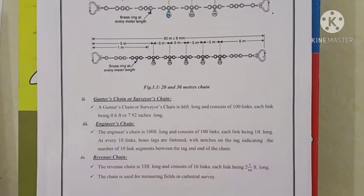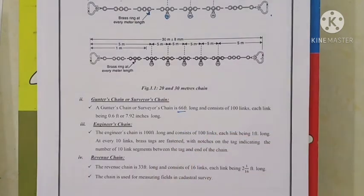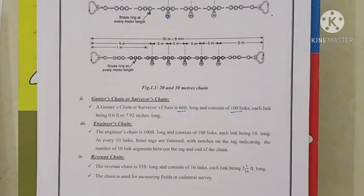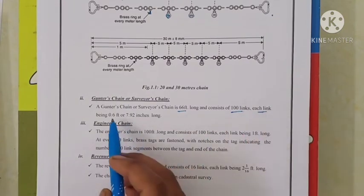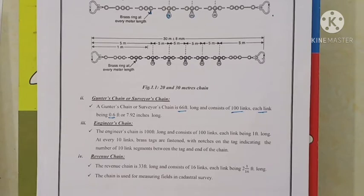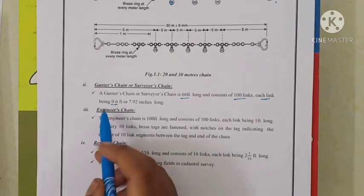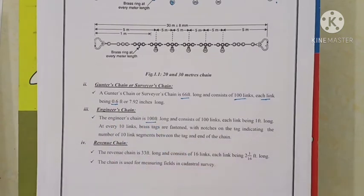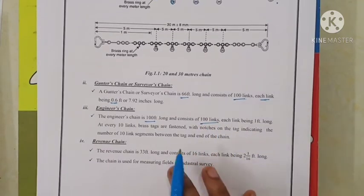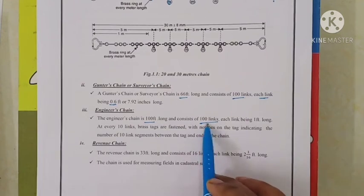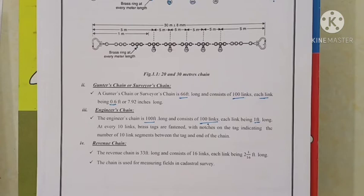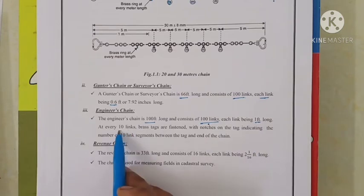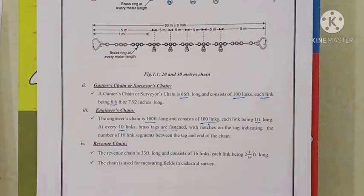A Gunter's chain or surveyor's chain is 66 feet long and consists of 100 links. Each link is 0.6 feet or 7.92 inches long. The engineer's chain is 100 feet long, consists of 100 links, with each link being 1 foot. Brass tags are provided at every 10 links for easier measurement.